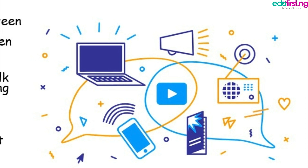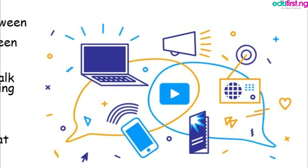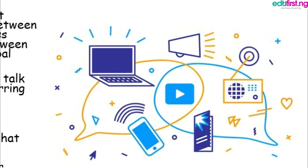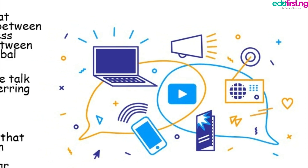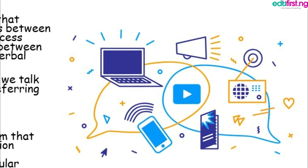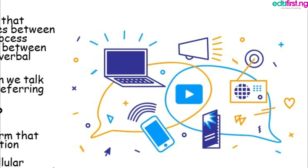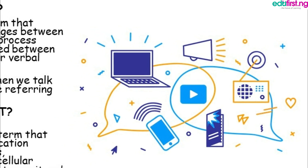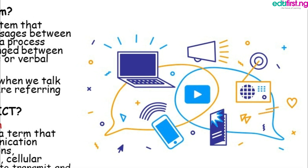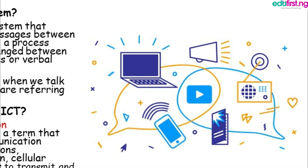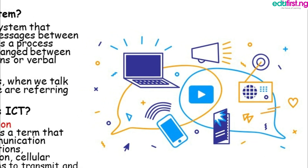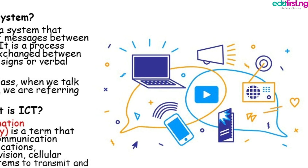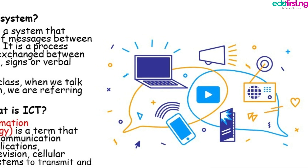Put simply, communication system is the same as ICT, that is information and communication technology, which means the use of technology for collecting, processing, managing, storage, retrieval and dissemination of information.